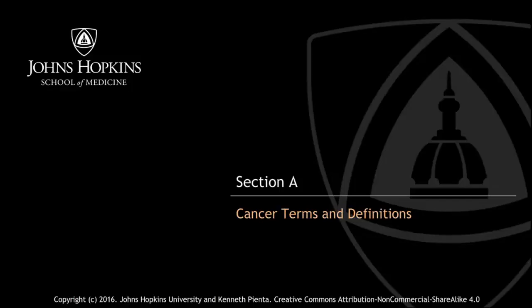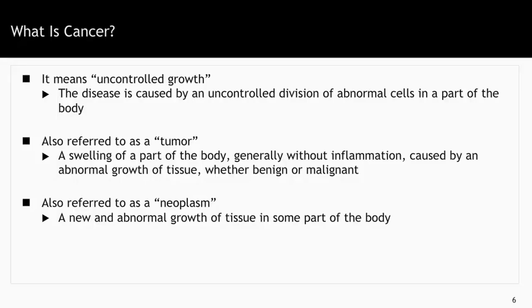Let's start with cancer terms and definitions. What is cancer? In its simplest form, it means uncontrolled growth — the disease caused by an uncontrolled division of abnormal cells in a part of the body. It's often also referred to as a tumor, which is defined as a swelling of a part of the body, generally without inflammation, caused by an abnormal growth of tissue, whether benign or malignant.